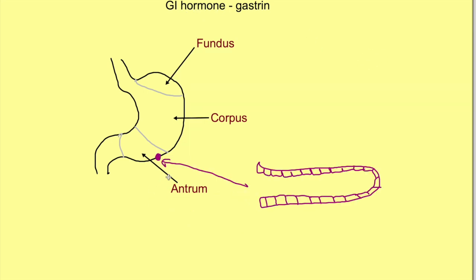The mucosa of the stomach dips a little deep, and the opening of this dip in the mucosa on the lumen of the stomach is known as the gastric pit.